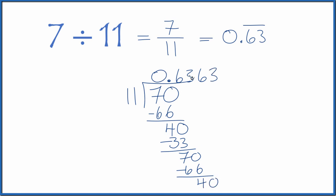And it just keeps going 0.636363 and so on. So when we divide 7 by 11, we get 0.63 and that 63 keeps repeating.